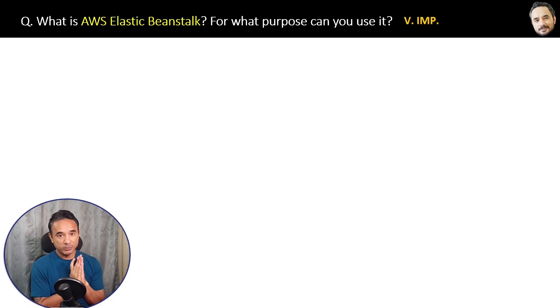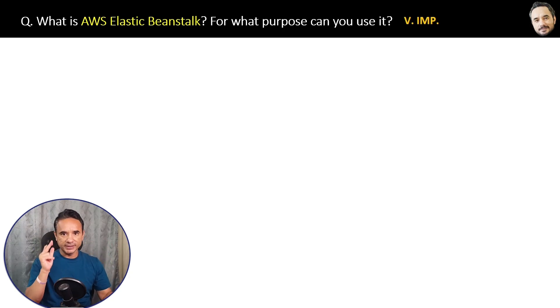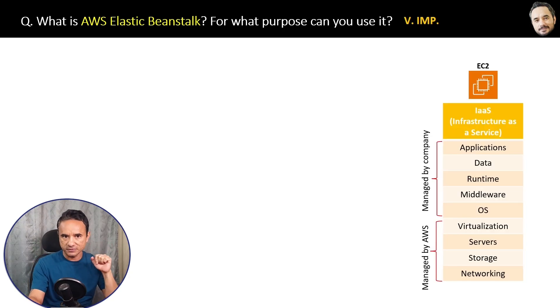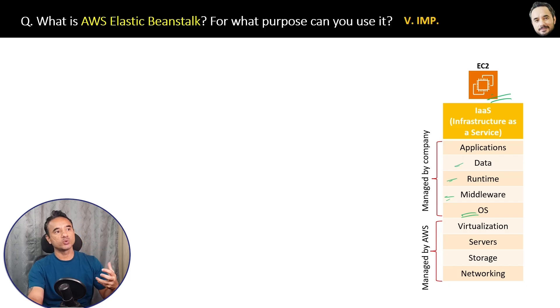What is AWS Elastic Beanstalk and for what purpose can you use it? If you remember IaaS, which stands for Infrastructure as a Service, then EC2 is an example of IaaS. When using EC2, you have to manage many things — you have to install the operating system, frameworks, and everything needed for application hosting.